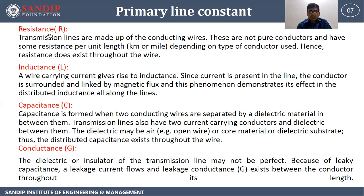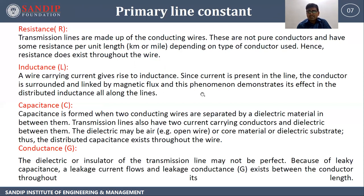First, resistance: transmission lines are made up of conducting wires which are not pure conductors and have some resistance per unit length depending on the type of conductor used. Inductance: a wire carrying current gives rise to inductance. Since current is present in the line, the conductor is surrounded and linked by magnetic flux, and this phenomenon demonstrates its effect in distributed inductance all along the line.